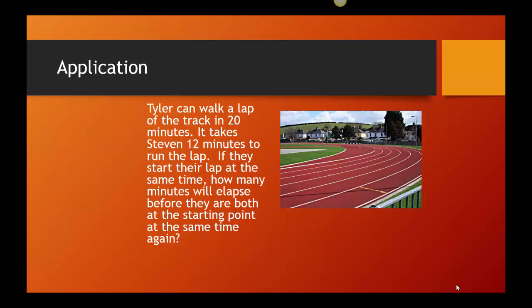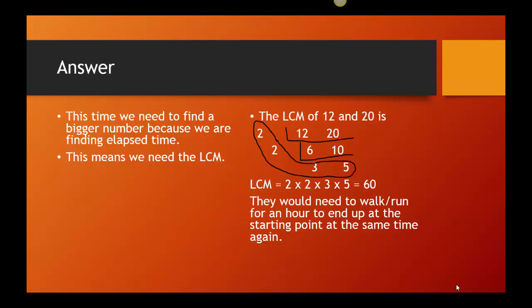Let's try another problem. Tyler can walk a lap of the track in 20 minutes. It takes Steven 12 minutes to run the lap. If they start the lap at the same time, how many minutes will elapse before they are both at the starting point at the same time again? So once again, our problem should always start by trying to figure out are we using the GCD or the LCM? Because we're looking for when in the future are they going to be at the same point again, we know time tells me we're looking for the LCM.